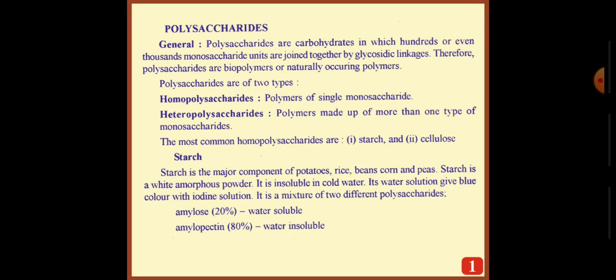Starch is the major component of potatoes, rice, beans, corn and peas. Starch is a white amorphous powder. It is insoluble in cold water. Its water solution gives blue color with iodine solution. It is a mixture of two different polysaccharides. Amylose 20% is water soluble, and amylopectin 80% is water insoluble.